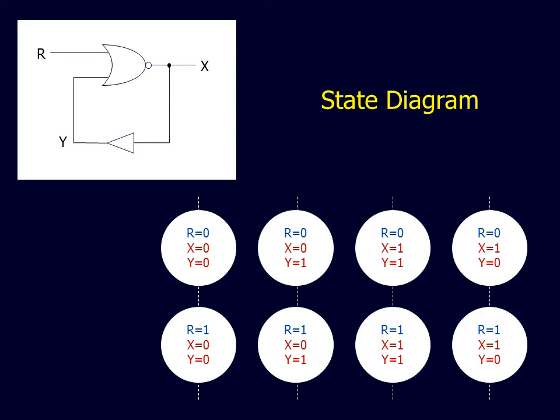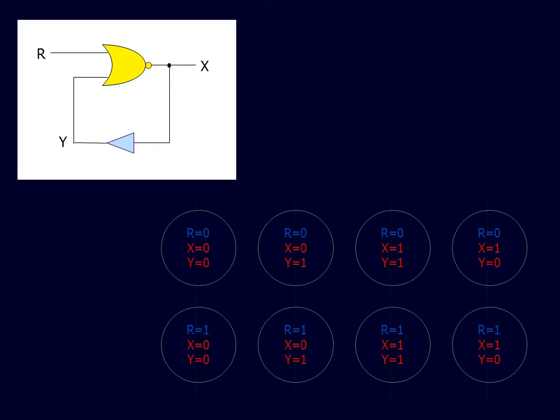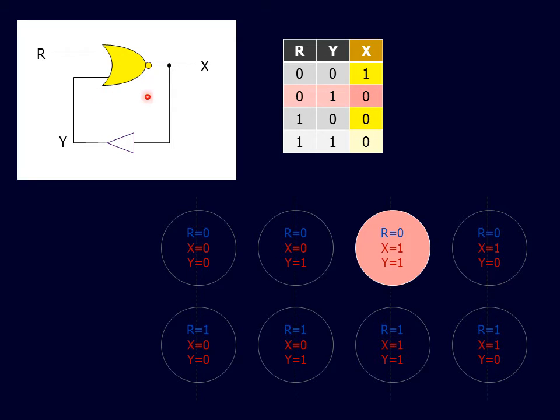The state diagram shows the link between states. These links are imposed by the individual circuit devices. Consider first the NOR gate. This gate determines the relationship among the R, Y and X parameters.